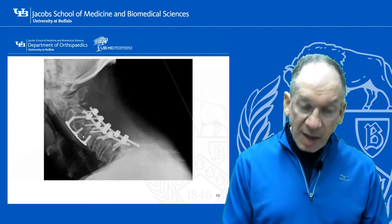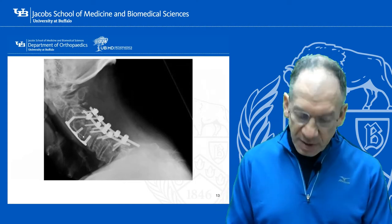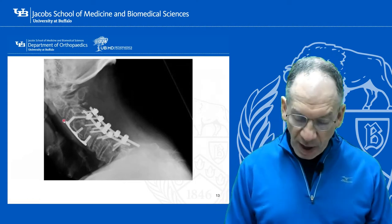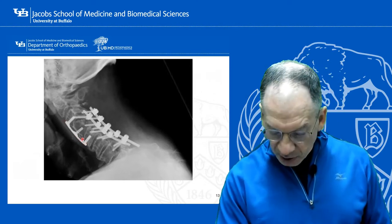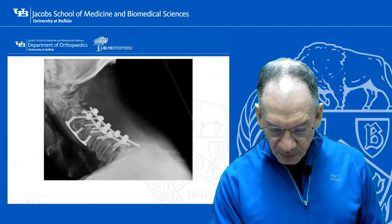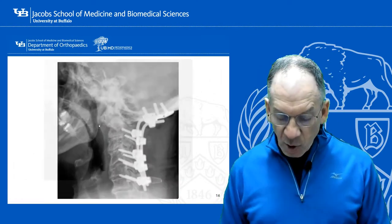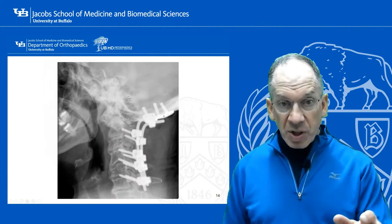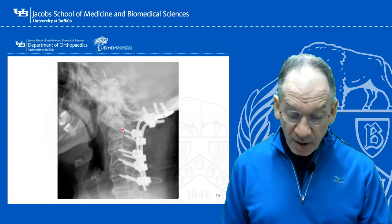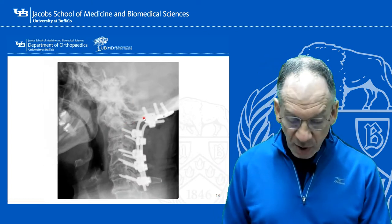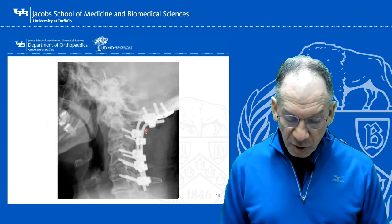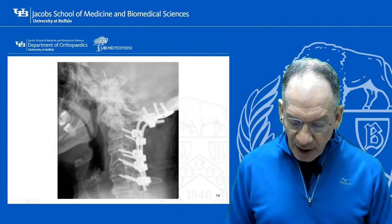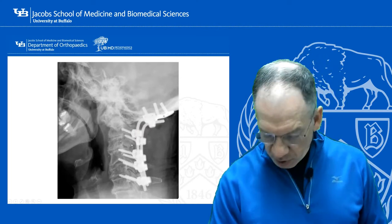Sometimes you have to go to both the front and back of the spine to stabilize. In this case, you have a plate on the front of the spine stabilizing, and rods and screws on the back. This is someone who had instability between the skull and the cervical spine, so you have to fuse the skull to the cervical spine, which pretty much eliminates rotation and is something you would do as a last resort.